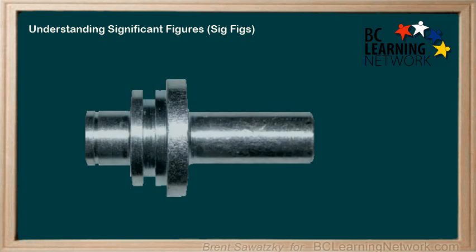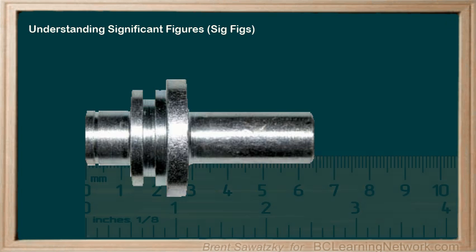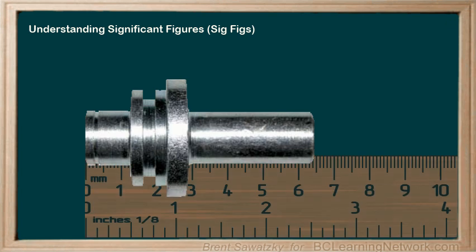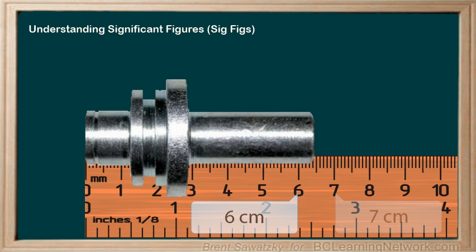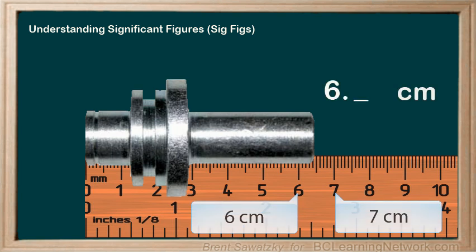Let's make a measurement. We want to measure this part in centimeters, so we take out a ruler and make the measurement. We can see that this part is definitely between six and seven centimeters, so we know it's six point something for sure.